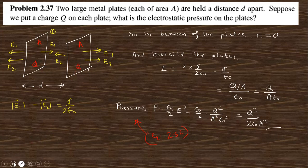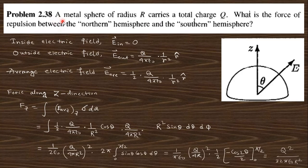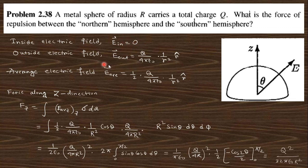Now go to question 2.38, which says: a metal sphere of radius R carrying a total charge Q. What is the repulsive force between the northern hemisphere and the southern hemisphere? The electric field inside the spherical shell is zero, and outside it follows the usual expression. The average electric field is (E_inside + E_outside)/2.